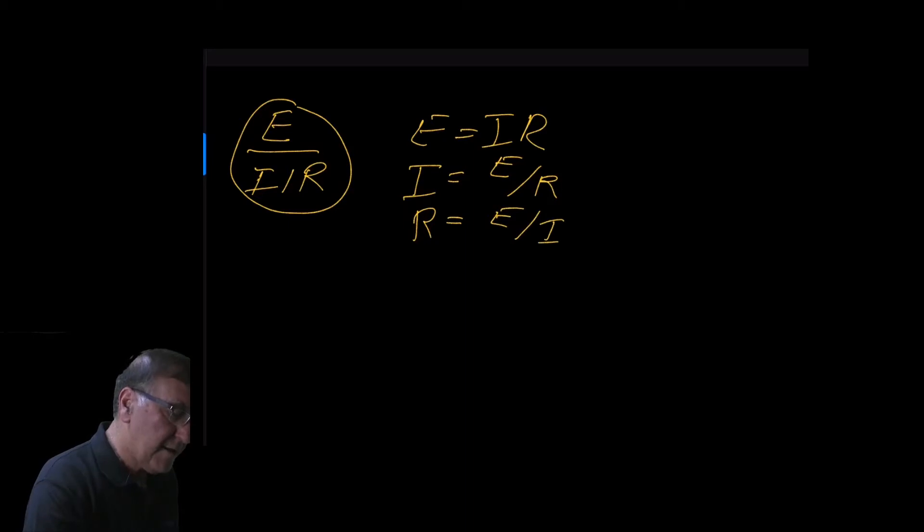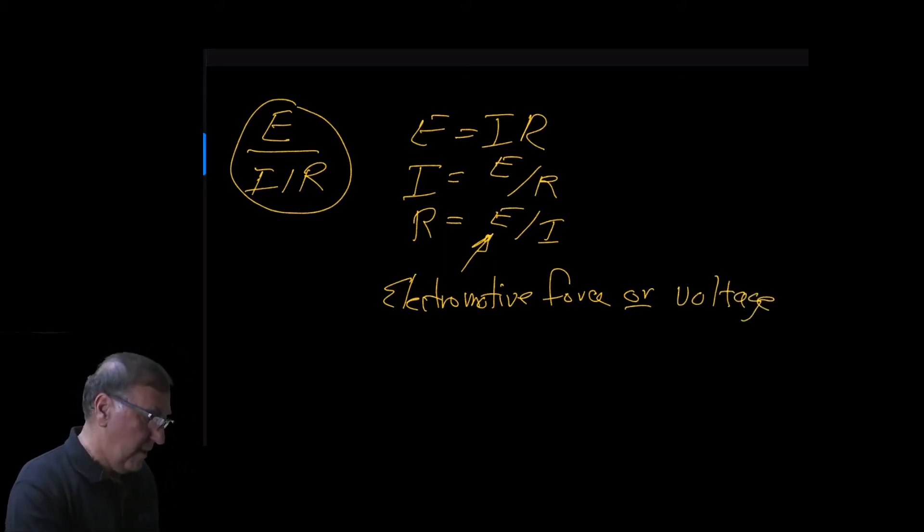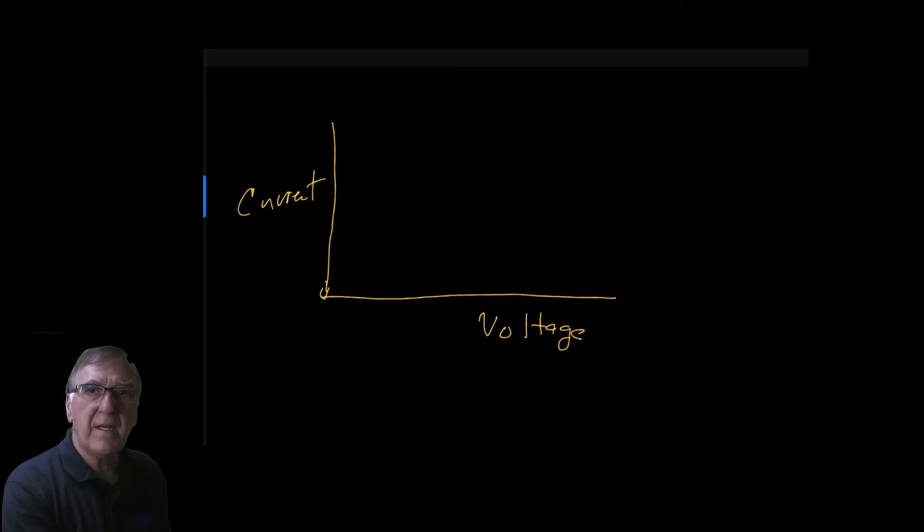E is called electromotive force or voltage. It can be called either one. And there's a linear relationship between voltage, current, and resistance. It looks something like this. We'll draw a little graph here, two axis, where we have voltage at the bottom and current on the Y axis.